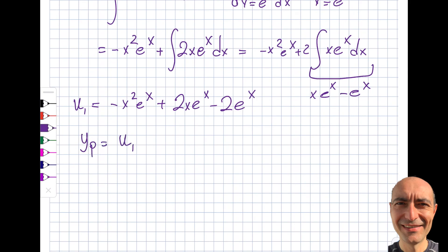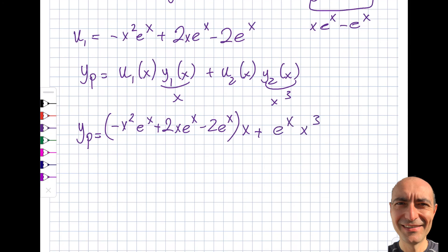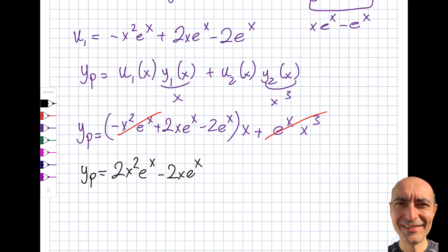Now yp = u₁·y₁ + u₂·y₂ = (-x²eˣ + 2xeˣ - 2eˣ)·x + eˣ·x³. Expanding: -x³eˣ + 2x²eˣ - 2xeˣ + x³eˣ. The -x³eˣ and +x³eˣ terms cancel! So yp = 2x²eˣ - 2xeˣ, which we can write as eˣ(2x² - 2x) or factor further as 2xeˣ(x - 1).